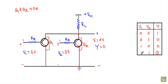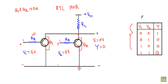This is the operation of the RTL NOR gate. The circuit is made of only resistors and transistors, and it verifies the truth table of a NOR gate. Thank you.